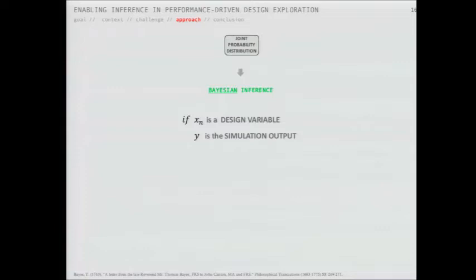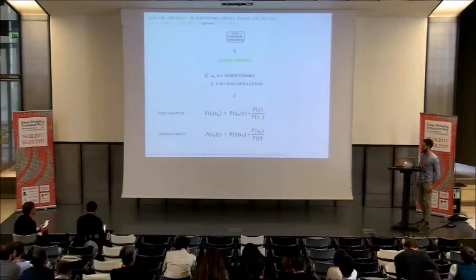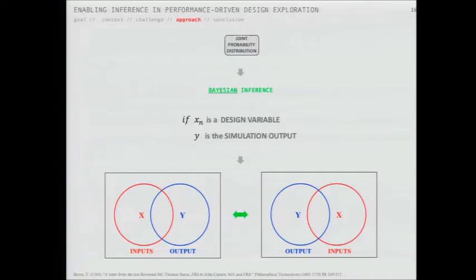If we apply this to our design analysis system, where X is a design variable and Y is a simulation output, we can substitute those into the formula and realize we can predict outputs from inputs: the probability of Y given a value for X, i.e., what is the probability of the physical behavior given some input values. Or the reverse: what is the probability of the inputs given the output - what are the most likely input values that will give me a particular output? In the probability space, there is no difference between inputs and outputs - that is the main advantage.